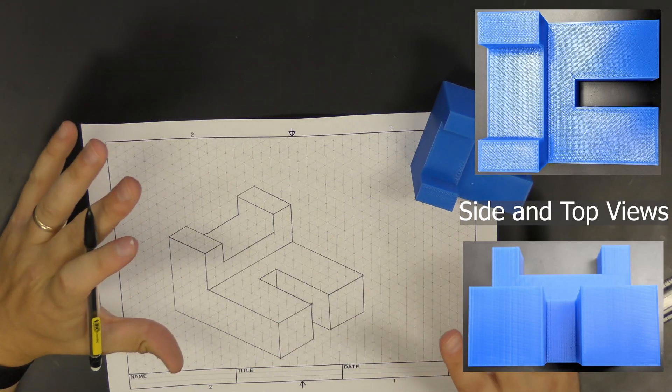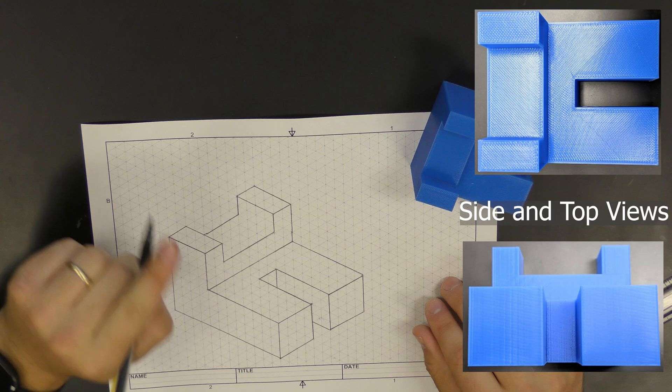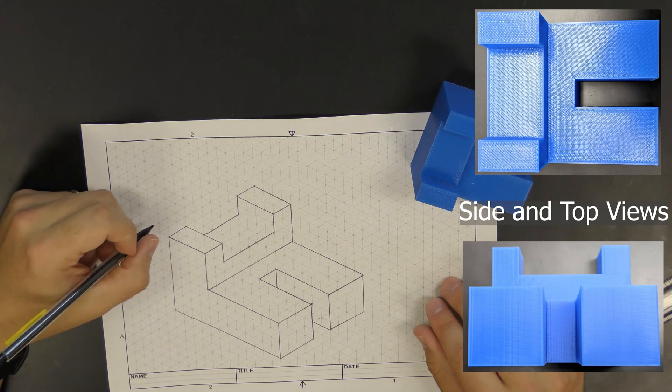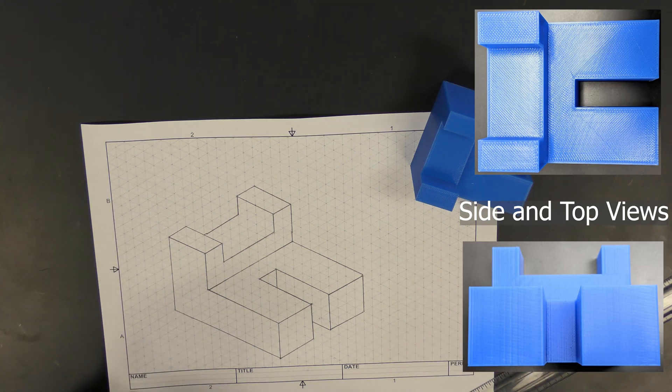Alright, so that's what our sketch should look like at this point. You can see that we've got that seam line that connects these two C-shaped features that go across here.